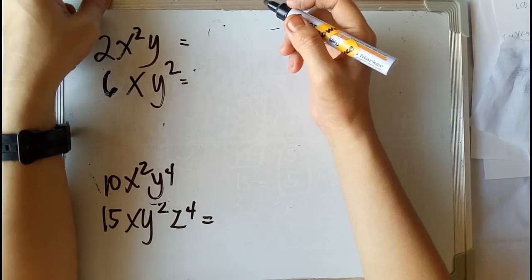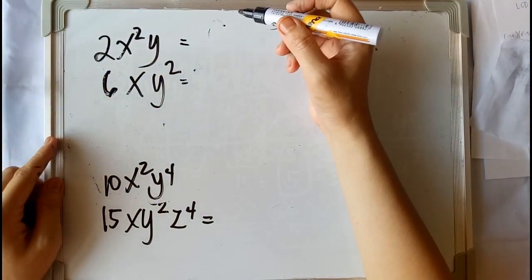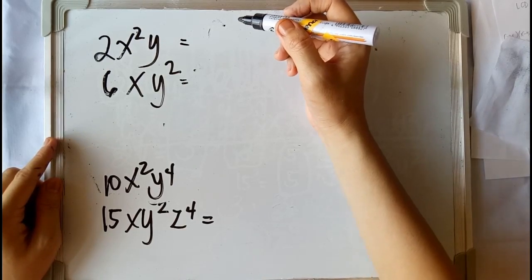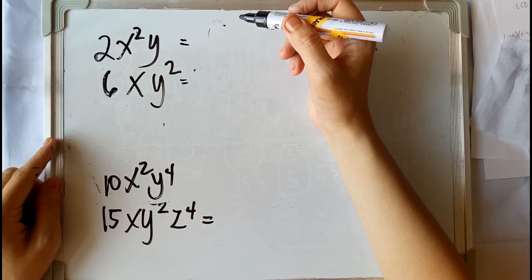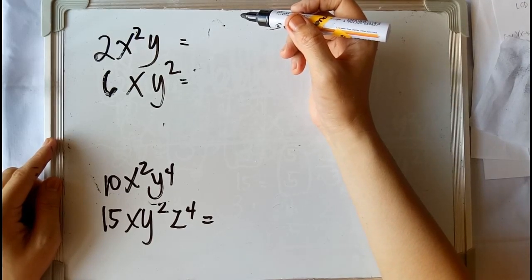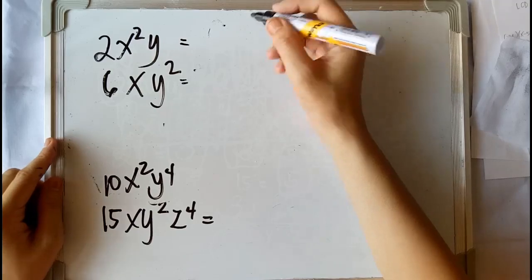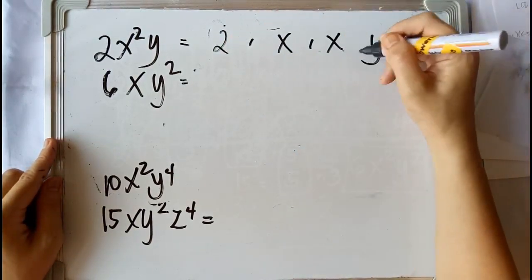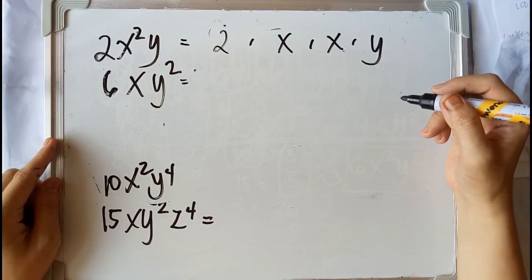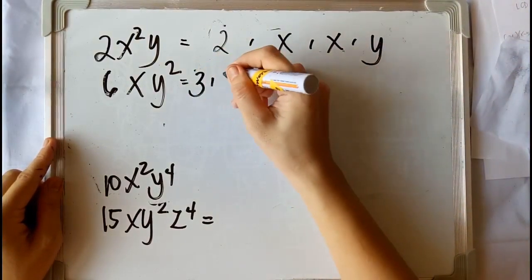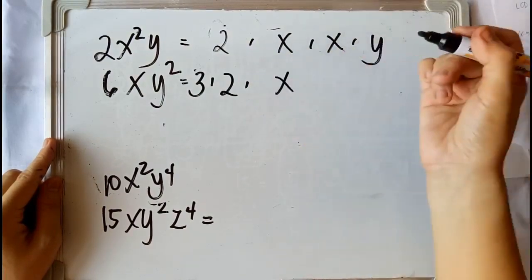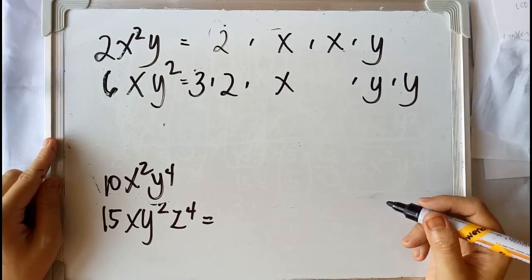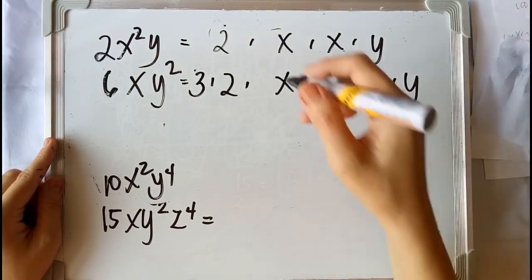Let us take different examples using monomials. For example, we have 2x squared y and 6xy squared. To find the LCM, all we need to do is follow the steps from the previous example by prime factorization. 2x squared y is equal to the product of 2, x, x, and y. 6xy squared, on the other hand, is equal to 3 times 2 times x times y times y.